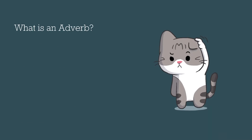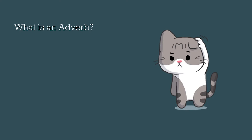But first, what is an adverb? I'm sure that you've asked yourself that question before, and it's pretty easy to describe. We know that an adjective helps describe a noun. Well, an adverb is pretty much the same thing. An adverb is a word that modifies a verb, an adjective, or another adverb.